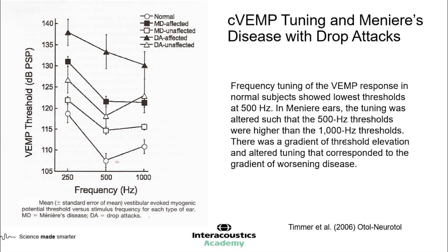Looking at C-VEMP tuning in Meniere's disease patients who have progressed to having drop attacks — this is Timmer et al. in 2006. In normal subjects, the largest responses were at 500 Hz as expected. However, in Meniere's ears, the tuning was altered so that 500 Hz thresholds were higher — requiring much louder stimuli to get a 500 Hz response compared to 1000 Hz. There was a gradient of threshold elevation, representing another tuning effect in a Meniere's population different from what we would expect in normal ears.